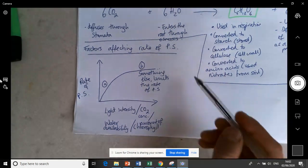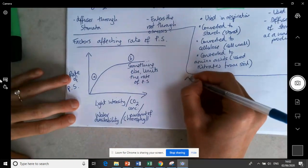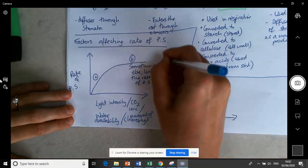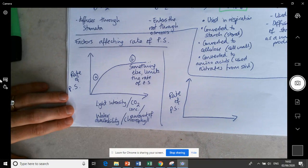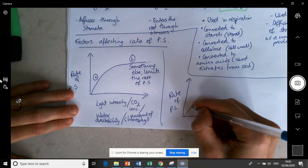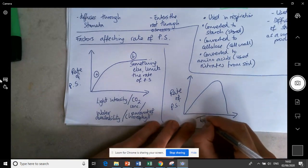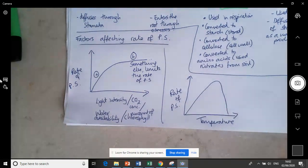So this is the normal graph. There's one factor that doesn't have this graph. Instead the graph looks like this. You still have rate of photosynthesis on your y-axis, but the graph then looks different. And this is for temperature. And we have to know this in slightly more detail.